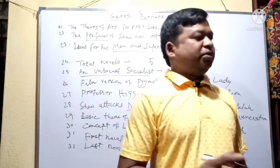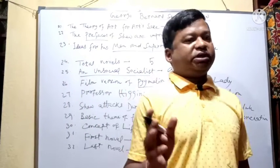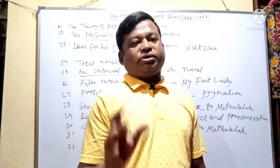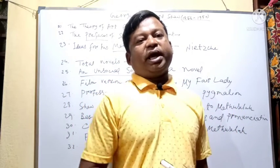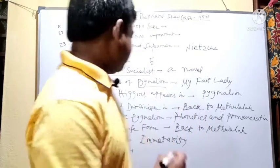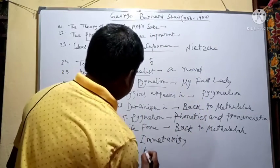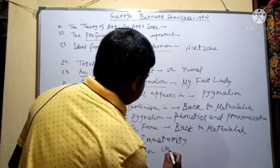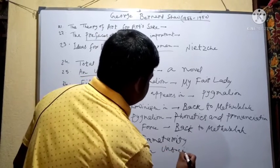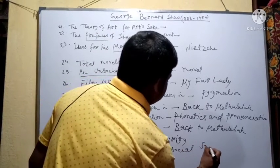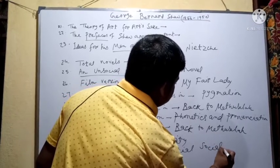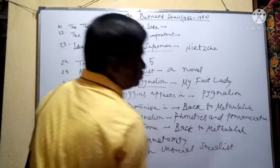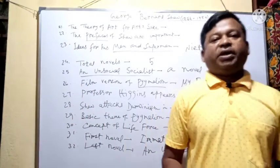What is the last novel of Shaw? The last novel of Shaw is An Unsocial Socialist.